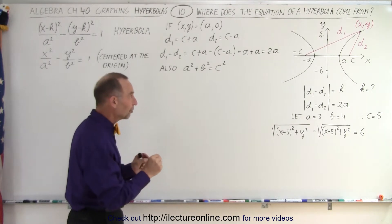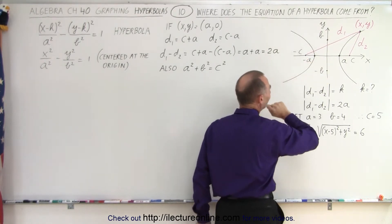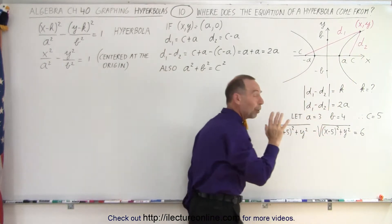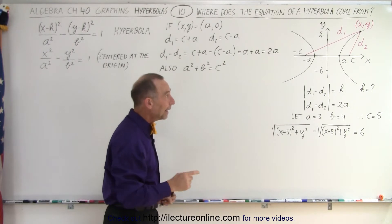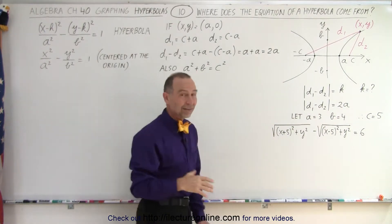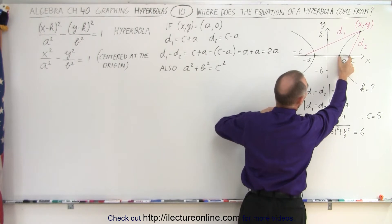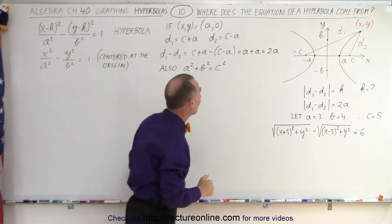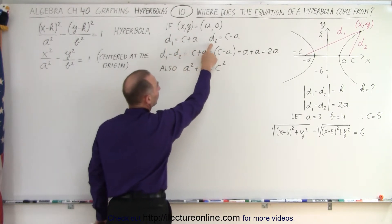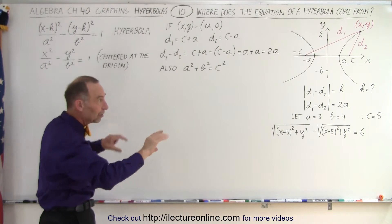The equation of a hyperbola comes from the following. If we draw a line from the negative C point — the point a distance C from the origin to the left — and the positive C point to any arbitrary point on the graph, let's call it the point XY, then the difference in the two distances always equals a constant, and that constant is equal to twice A. If we take that point and bring it to A-zero, then D1 would be C plus A and D2 would be C minus A. Subtracting the two gives us 2A. So that constant for a hyperbola that opens sideways is always equal to 2A. If the hyperbola opens upward, it would be equal to 2B.